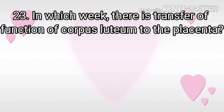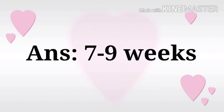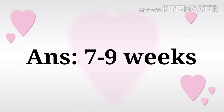Next question: In which week is there a transfer of function from corpus luteum to the placenta? The options are 2–3 weeks, 4–6 weeks, 7–9 weeks, 8–10 weeks. The answer is 7–9 weeks.